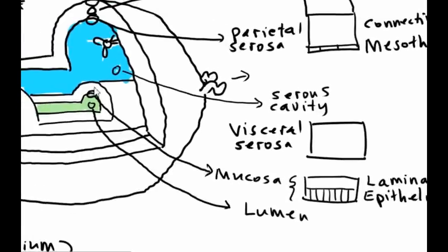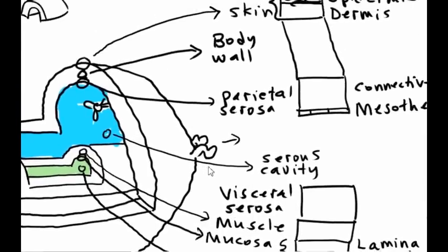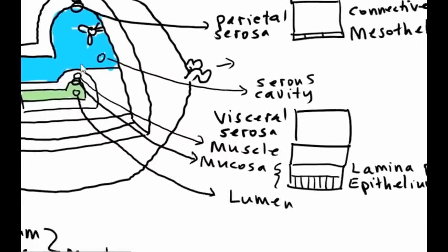The stomach wall. Many of these hollow organs have a muscular wall. So we'll indicate that. That's analogous to the muscle of the body wall. And then we have the visceral serosa, which we have avoided so far. So we want to indicate that.